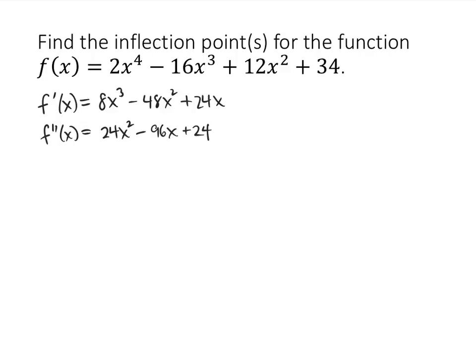Much like critical values are places where f prime can change from positive to negative or from negative to positive, inflection points are places where f double prime changes sign. We find critical values by setting f prime equal to 0, so we're going to find inflection points by setting f double prime equal to 0. So 24x squared minus 96x plus 24 equals 0.